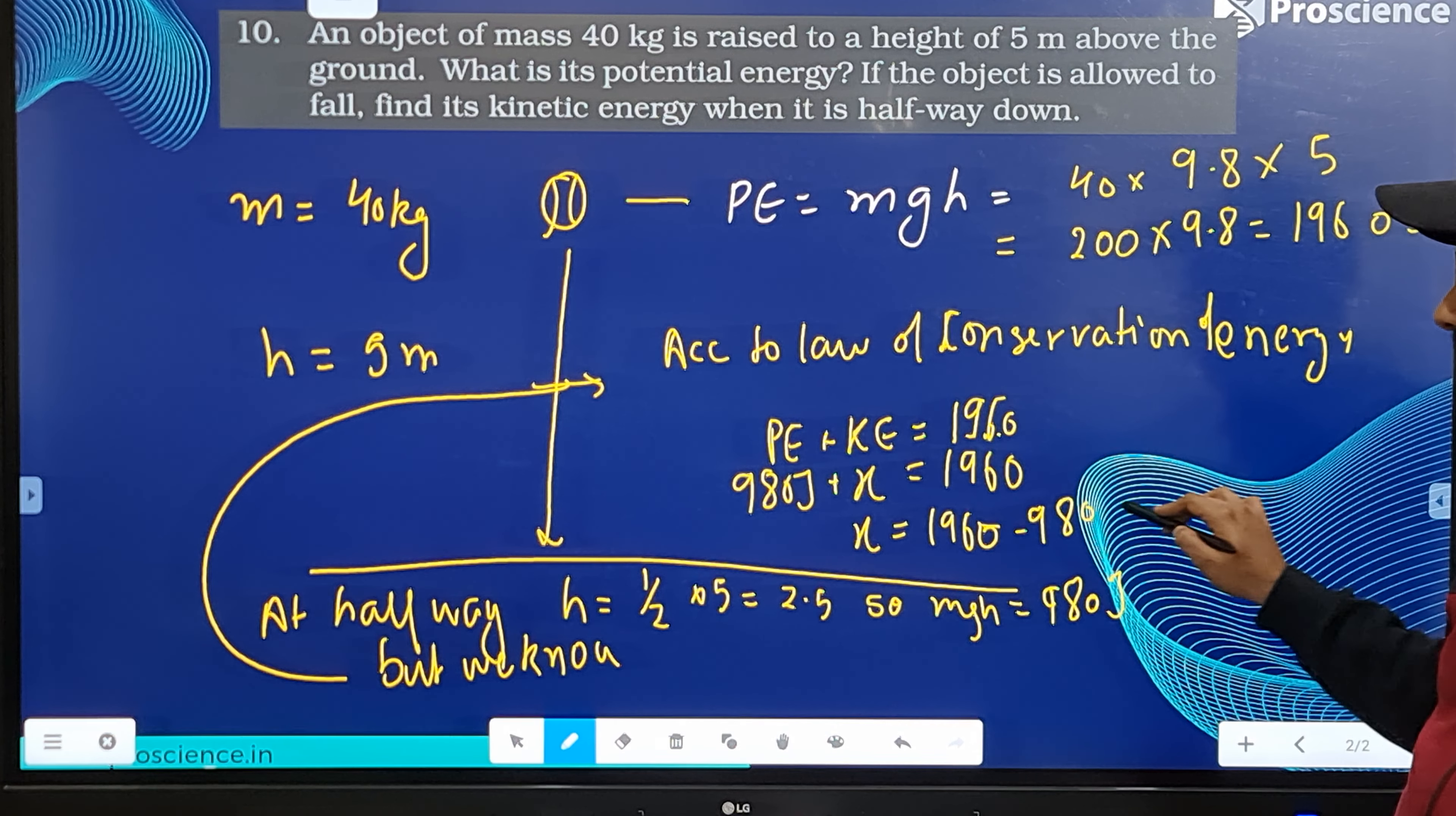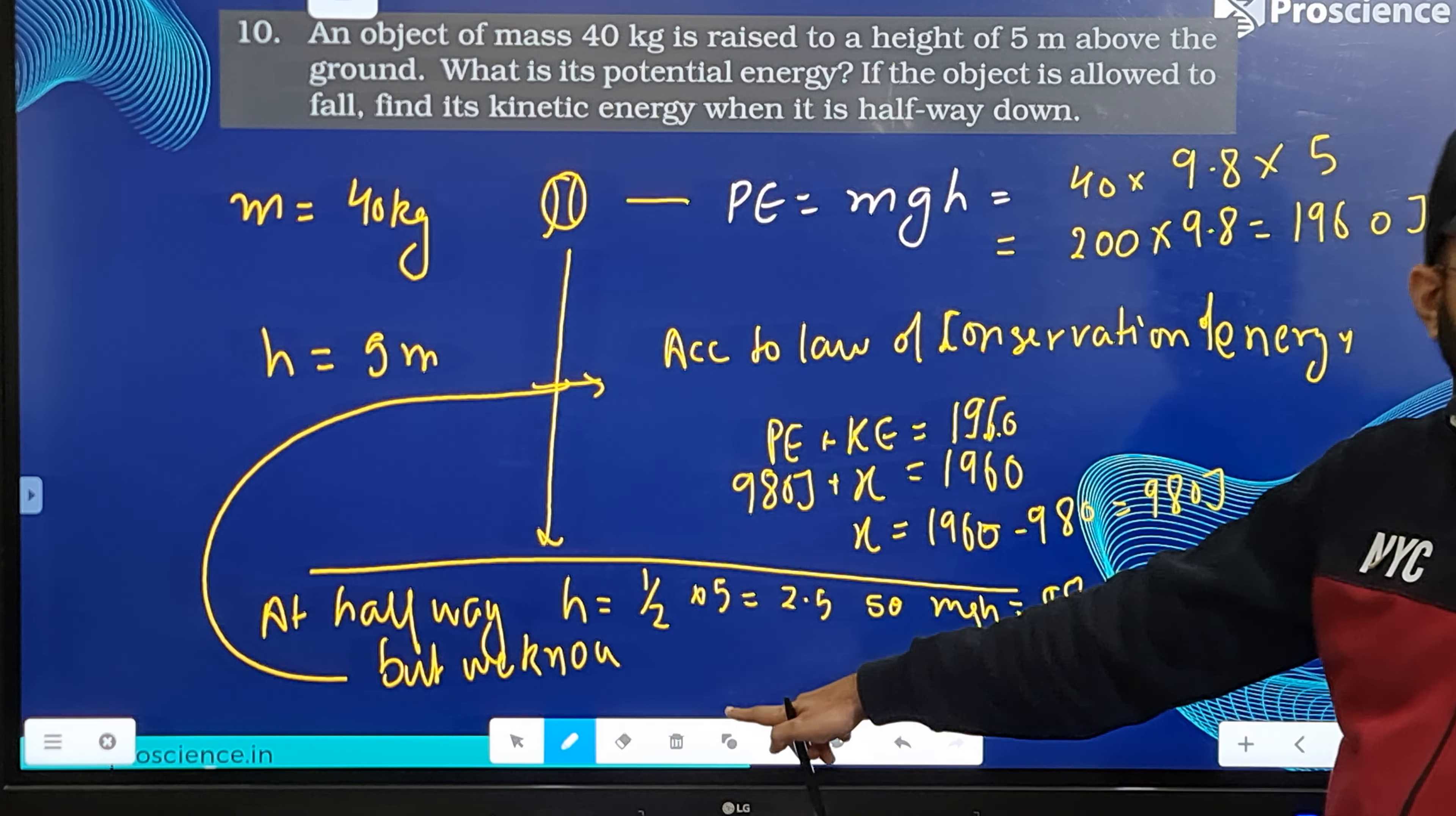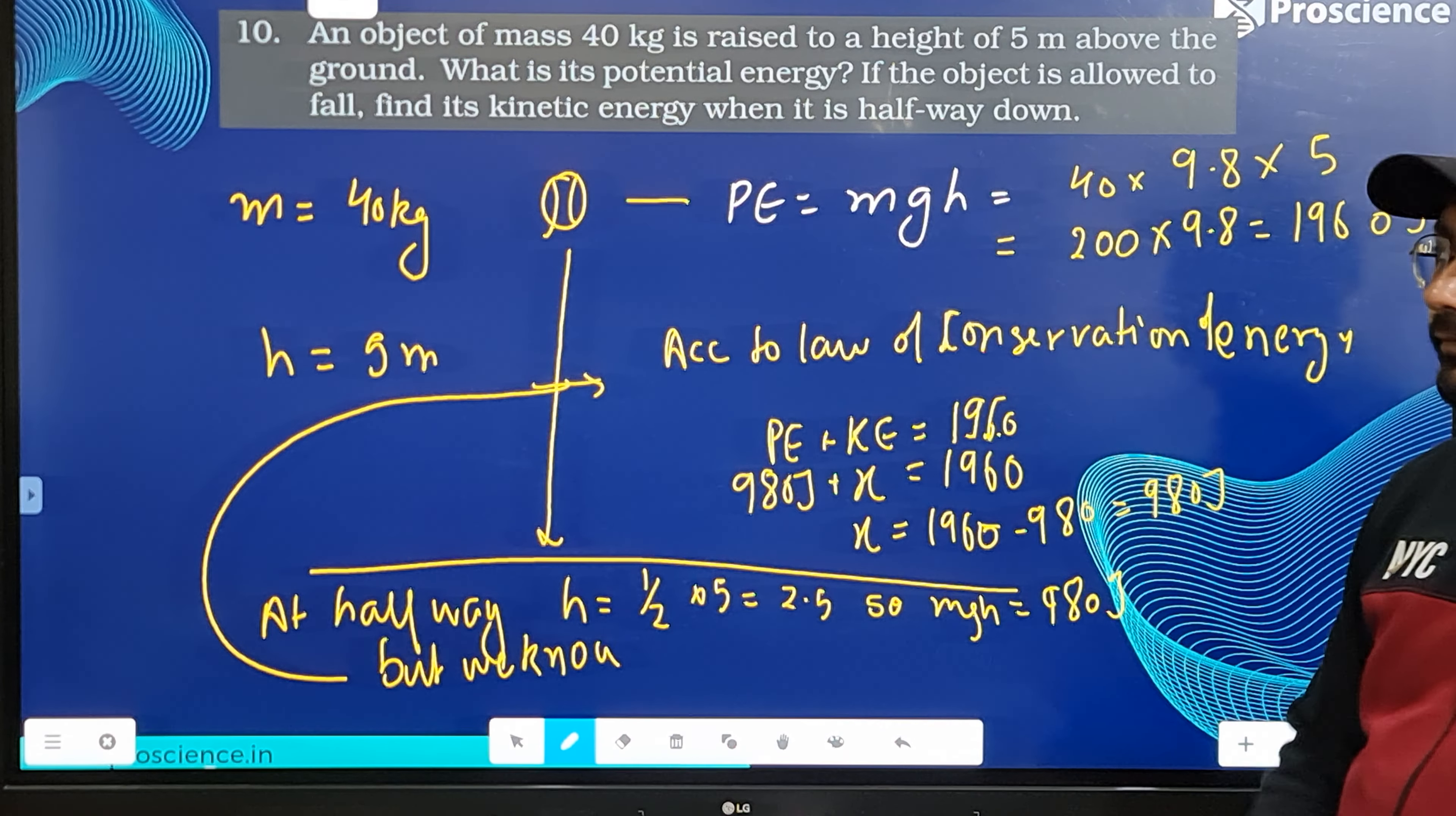You write your answer in this way so you get full marks. First, find potential energy halfway down, then use law of conservation of energy and find x, which is the kinetic energy.